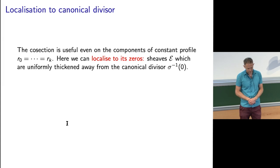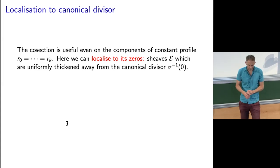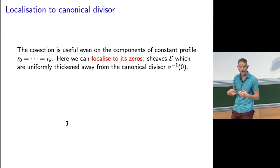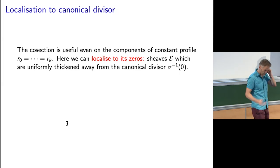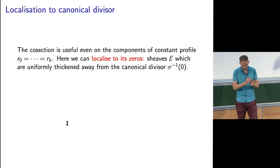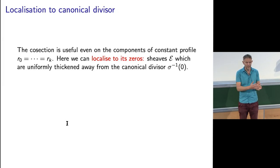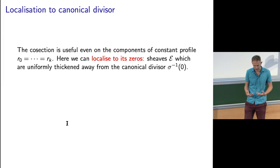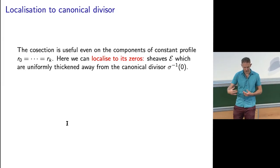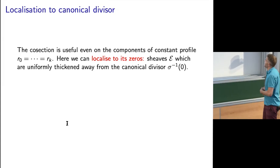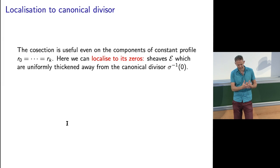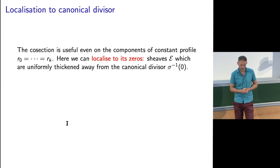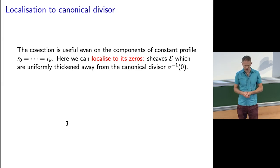The co-section localization: even when you take one of these components of the fixed locus where the profile is constant and all the ranks are constant, this vector field or co-section can be non-zero. You need more than just constant ranks — you need the sheaves to be uniformly thickened. So on these components you do get a non-zero vector field, but it has zeros. What it proves is that these sheaves have to be uniformly thickened; there's nothing interesting happening away from the zeros of this holomorphic two-form.